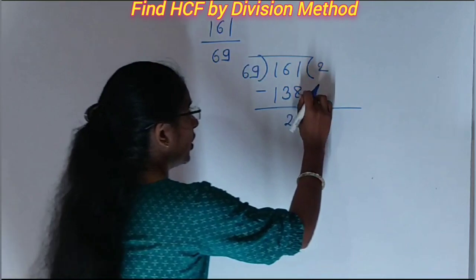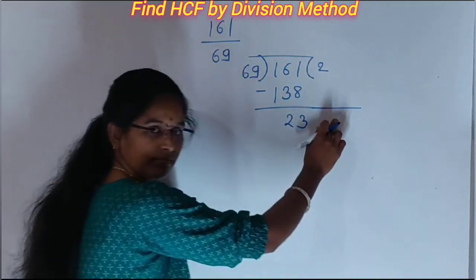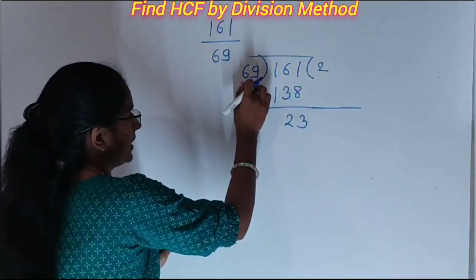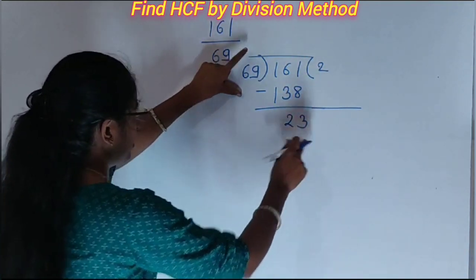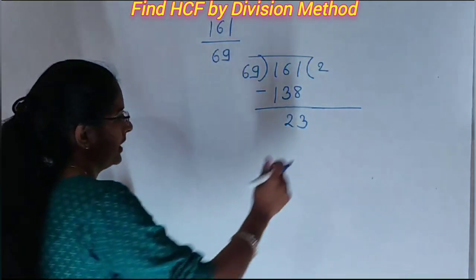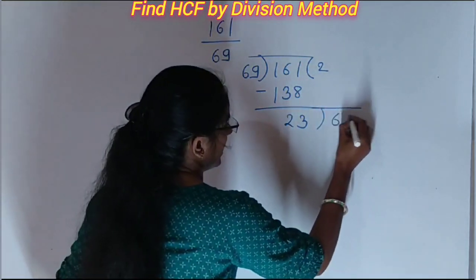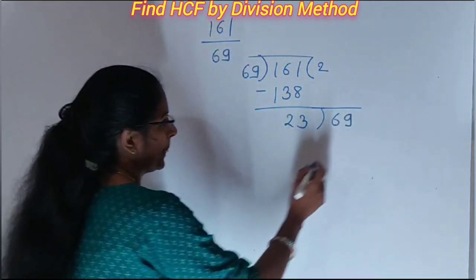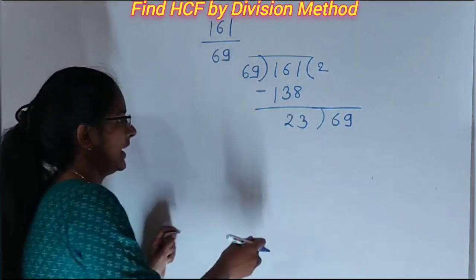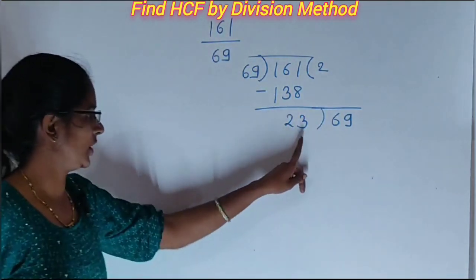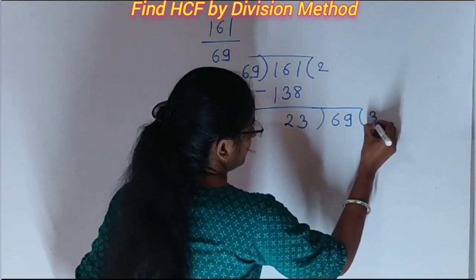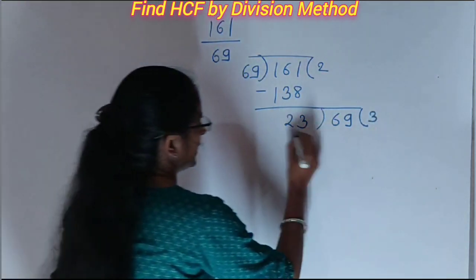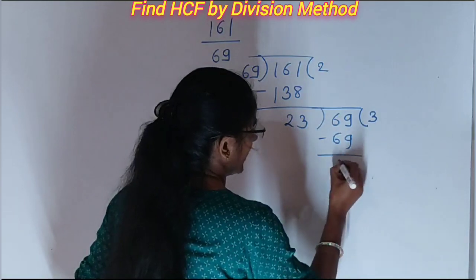Now don't put this number here, but try to divide 69 by 23. Write here 69. Then 23 threes are 69. We get zero.